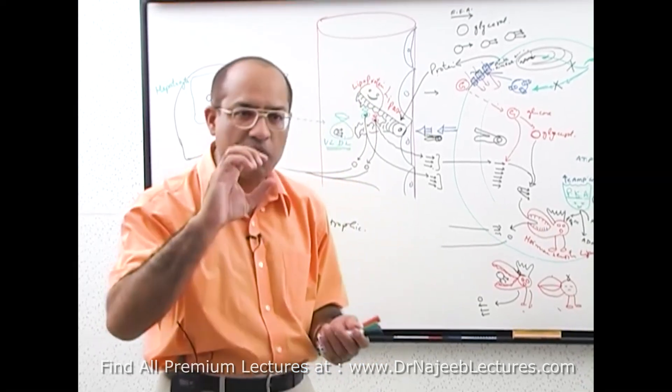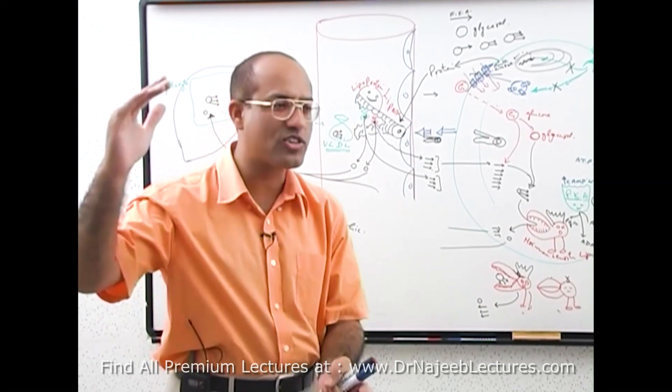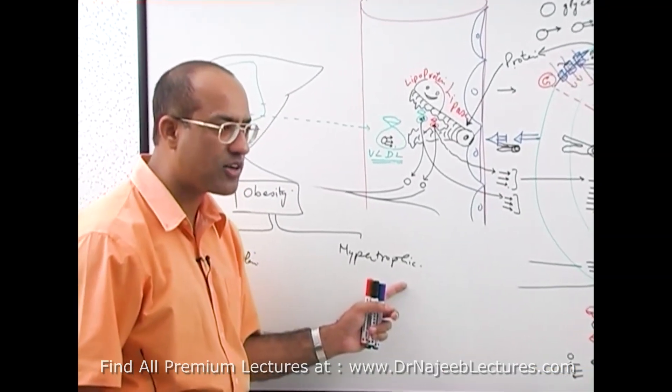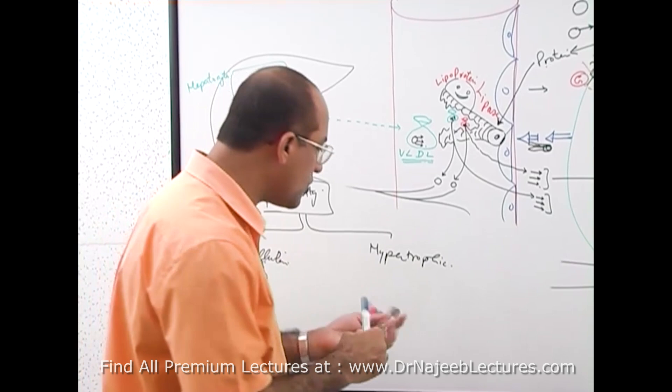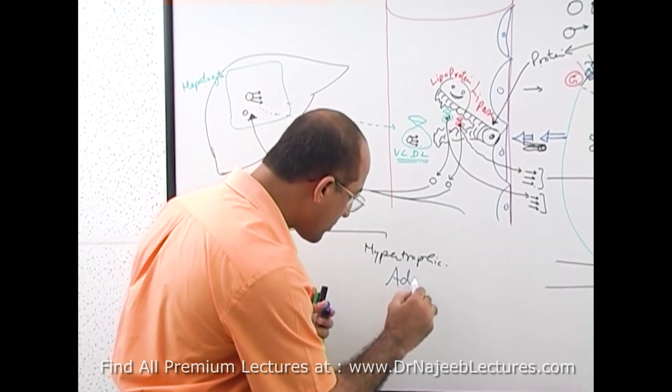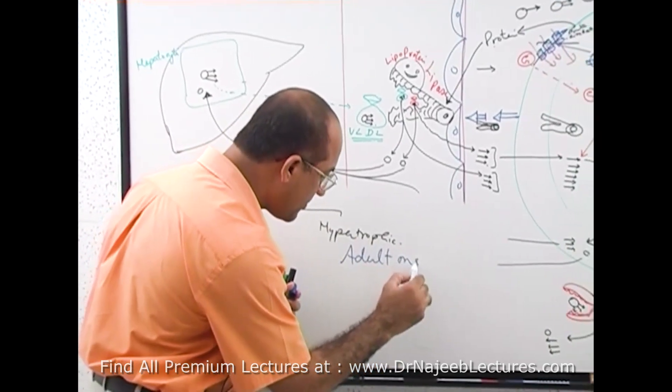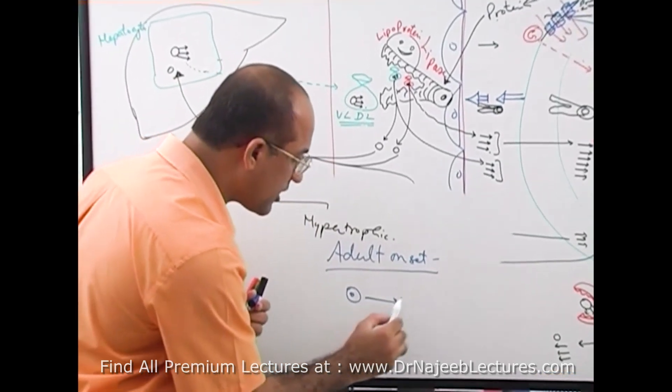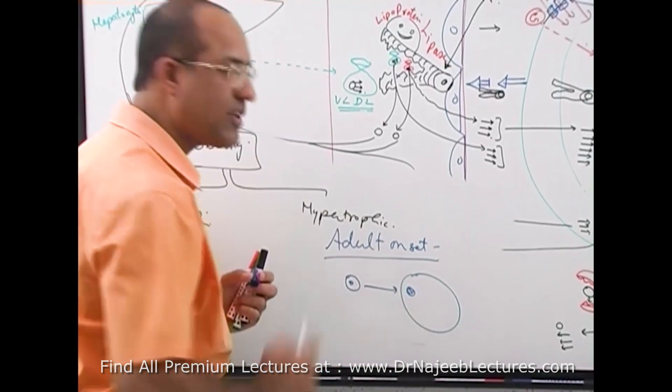This type of situation when a small cell increases size is called hypertrophy. So adult onset obesity is hypertrophic. Hypertrophic means small fat cells will convert into a large fat cell.